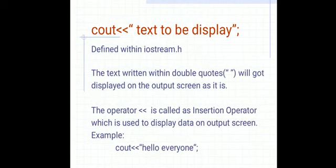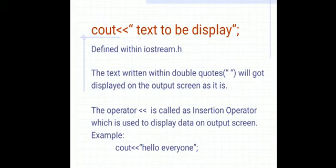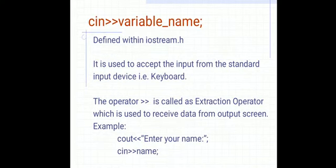Moving towards cout — the syntax of the cout statement is: cout, insertion operator, then in double quotes write the text to be displayed, close the double quotes, and add a semicolon. The cout function is defined within iostream.h. The text written within double quotes will be displayed on the output screen as-is. The double less-than sign is called the insertion operator, which is used to display data on the output screen. For example: cout insertion operator double quotes 'Hello everyone' double quotes semicolon.